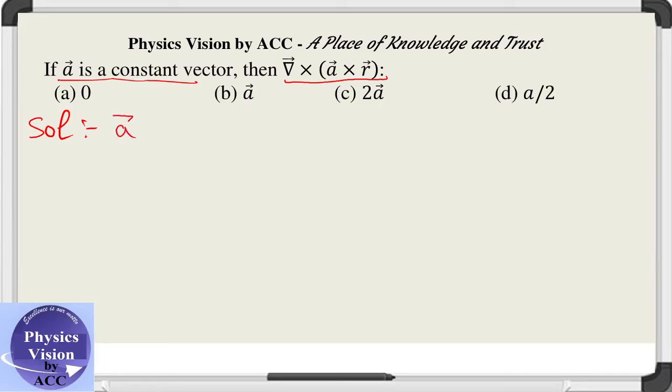Let us take a as some constant magnitude with i cap plus j cap plus k cap in this way, and r is the position vector as we know, given as x i cap plus y j cap plus z k cap.